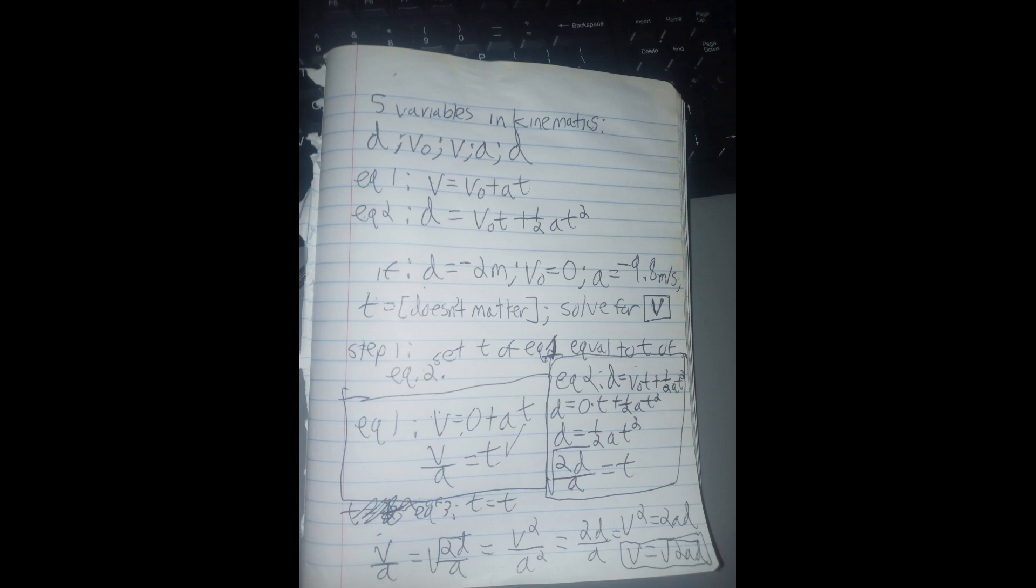How do we do that? Well, let's examine what we know already. We know equation one has three variables in it. Initial velocity, final velocity, acceleration, and time. Apologies, four variables.